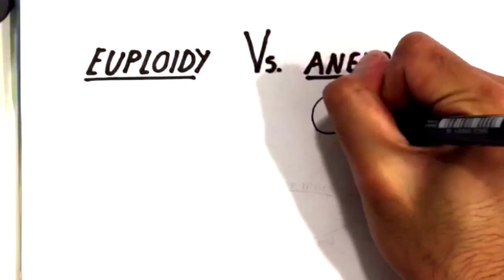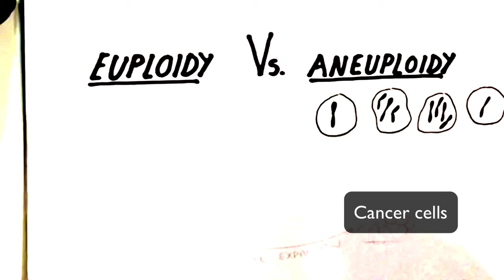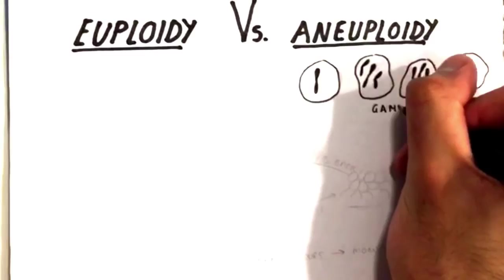Let's explore the idea of euploidy and aneuploidy. In a normal healthy cell, each of the autosomes will have a normal structure and exist in pairs, while the sex chromosomes will have X and Y chromosomes present in the number appropriate for the sex of the individual. So normal cells are euploid. Cancer cells, on the other hand, are aneuploid — meaning their chromosomes have a very different structure from the normal chromosomes in a healthy cell. This is because cancer cells are mutated; they are mutant cells.